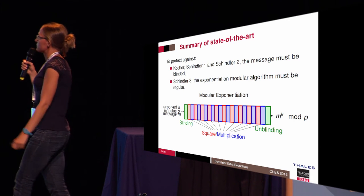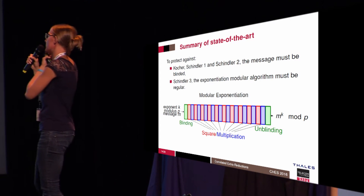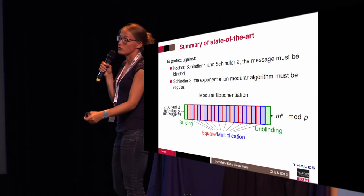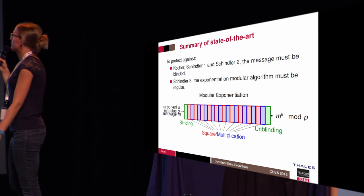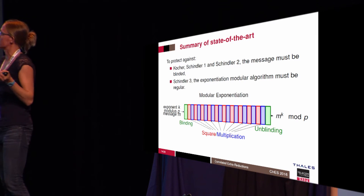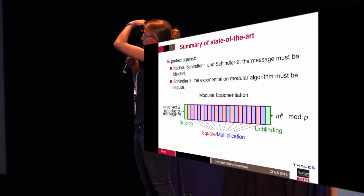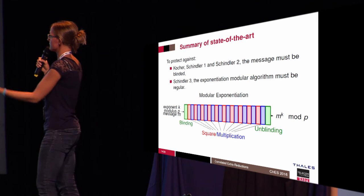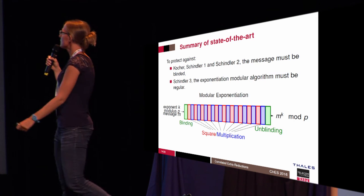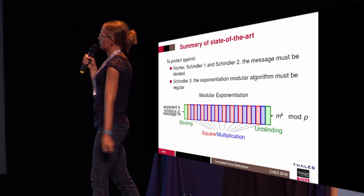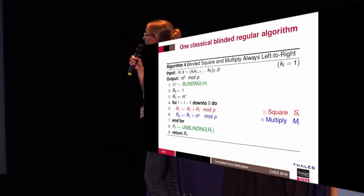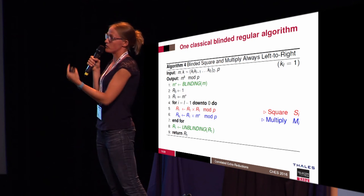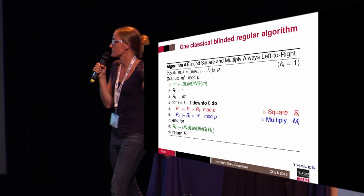To sum up, Kocher and Schindler 1 and 2 use chosen messages. To protect against these attacks, you just blind the message. Schindler 4 finds the difference between square and multiply. If you use an algorithm like square-and-multiply-always, Montgomery ladder, or similar, you are protected against Schindler 4. So how do we break these algorithms? In this talk I present the attack against square-and-multiply-always; in the paper we also have the part against Montgomery ladder.